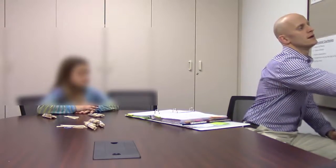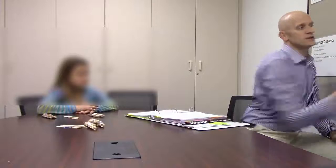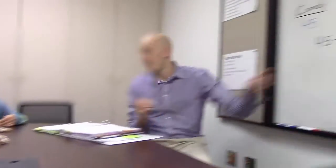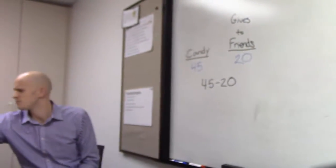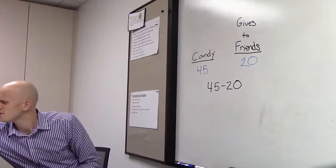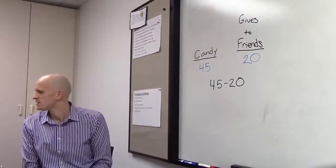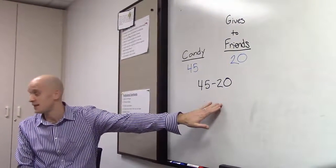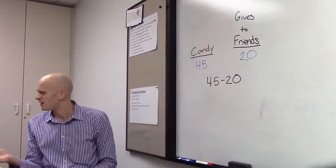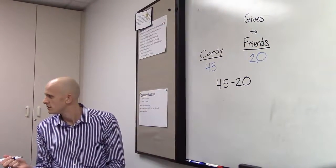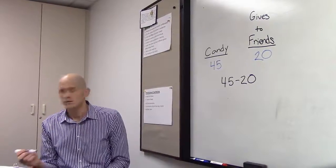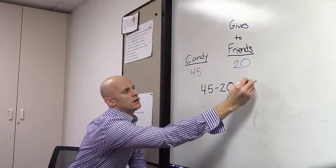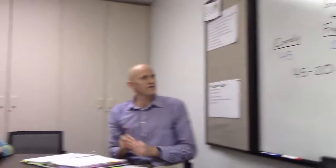So the problem that you're thinking about is you are doing 45 subtract 20, and you took away from the 45 two of those bundles. How many are in each of these bundles? Ten. So you took two bundles away — two tens away — and you had how many left? 25. So 45 subtract 20 is 25.